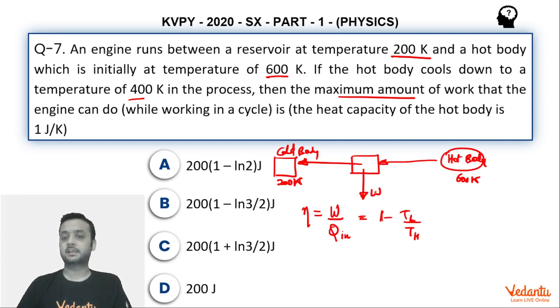Now if we look at the situation, the sink temperature, the cold body temperature, is constant at 200 Kelvin but the higher temperature is initially at 600 Kelvin. So this engine's efficiency will actually change.